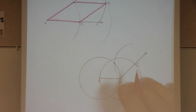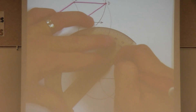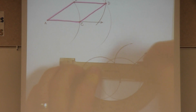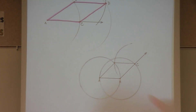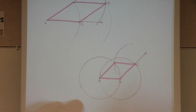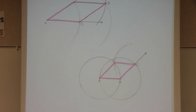So let's go ahead and draw it in. And then lastly, let's highlight the rhombus. This would be rhombus A, B, C, D. Thank you for watching, and I hope this helped you understand how to construct a rhombus.